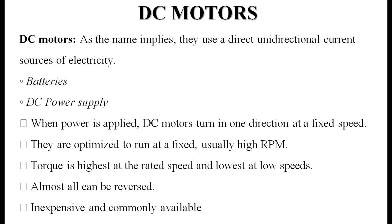DC motors, as the name implies, use direct unidirectional current as their source of electricity — typically a battery or DC power supply. When power is applied, DC motors turn in one direction at a fixed speed. They are optimized to run at fixed, usually high RPMs. Torque is highest at rated speed and lowest at low speeds. Almost all motors can be reversed, and they are inexpensive and commonly available.